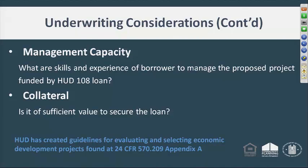HUD has established guidelines in addition to the ones we'll discuss later — guidelines for evaluating and selecting economic development projects. They're in appendix A of our regulations and referenced in 570.209 of the public benefit regulations.